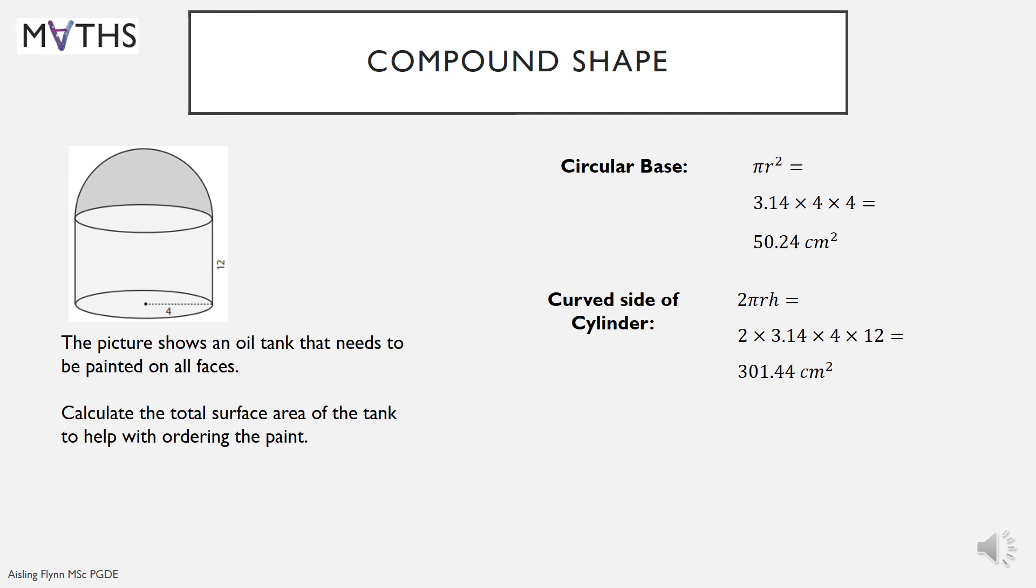And finally, the curved surface of the hemisphere. So a hemisphere is half of a sphere. So it'll be 4 pi r squared divided by 2. We've only got half. So that will be 2 times instead of 4 times pi r squared. The radius, of course, is the same as the radius given for the cylinder because it sits exactly on top. We got 100.48. To answer the question, you add the three individual answers. We got 452.16 centimeters squared.